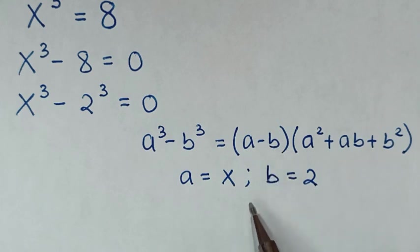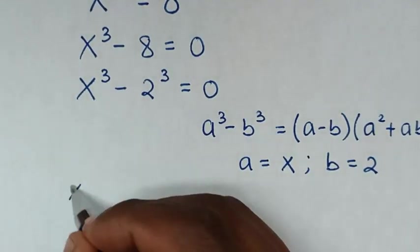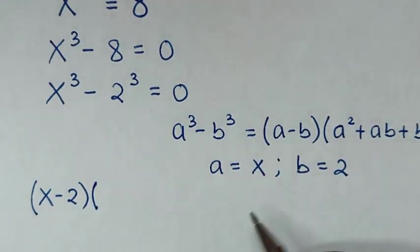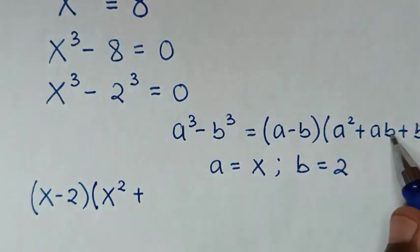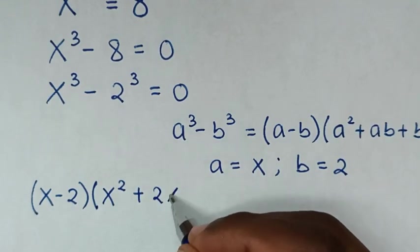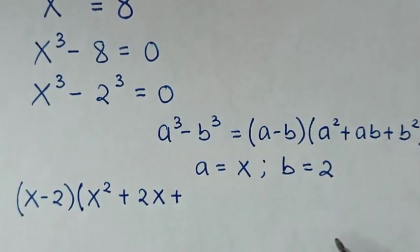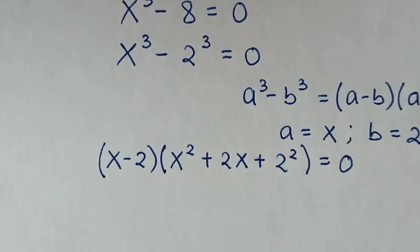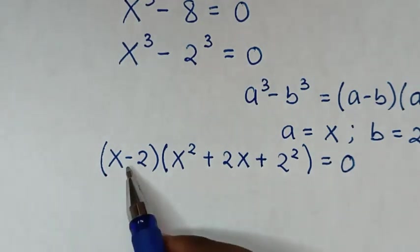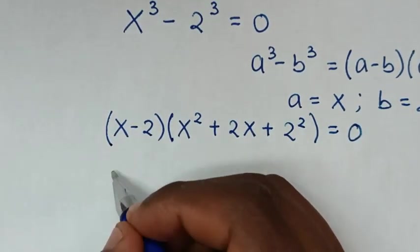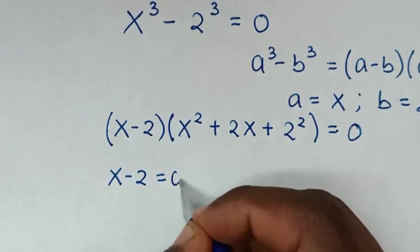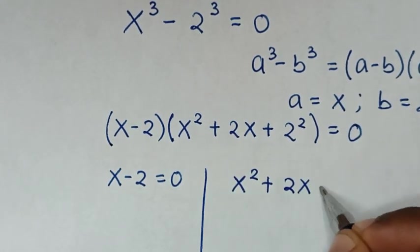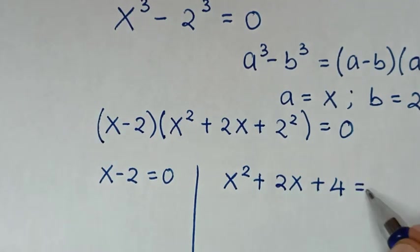Applying this form: (x - 2)(x² + 2x + 2²) = 0, which gives us (x - 2)(x² + 2x + 4) = 0. From here we have two solutions: the first is x - 2 = 0, and the second is x² + 2x + 4 = 0.